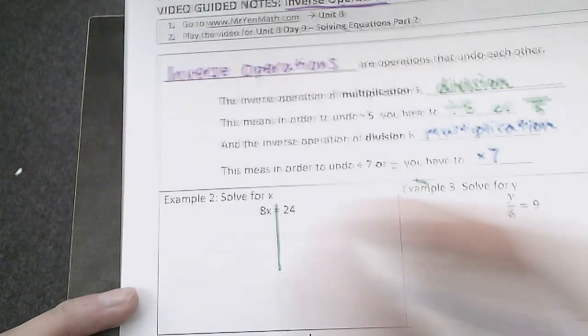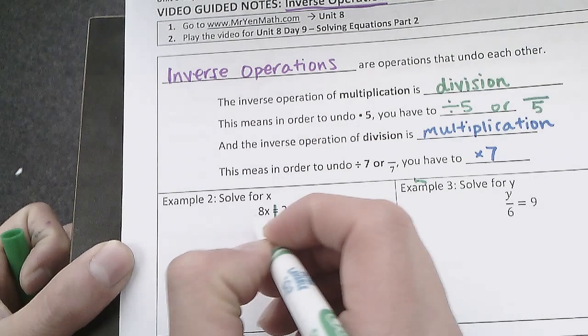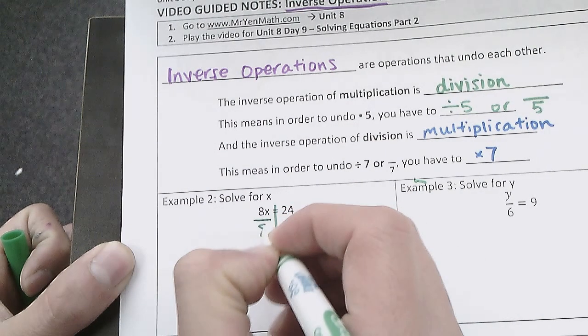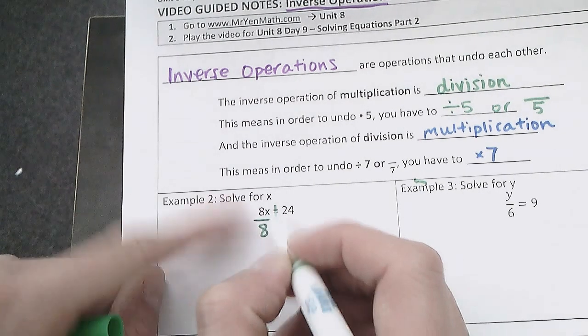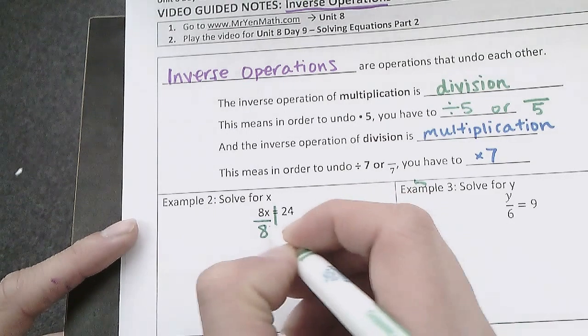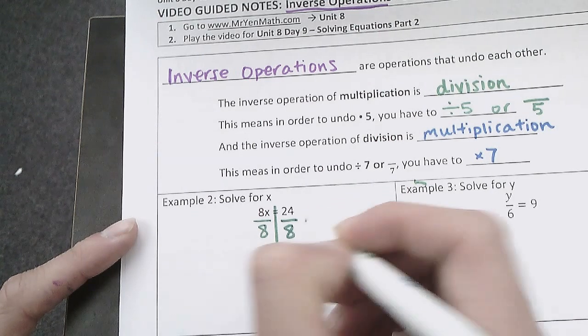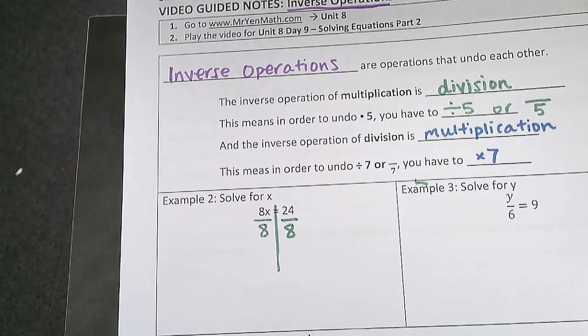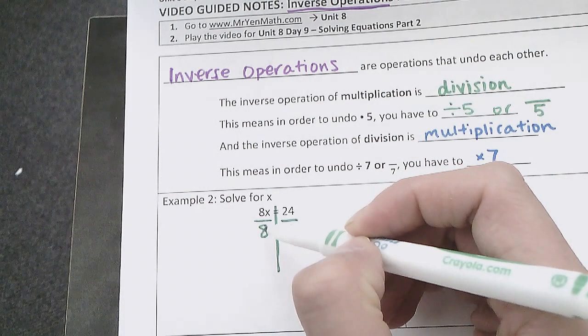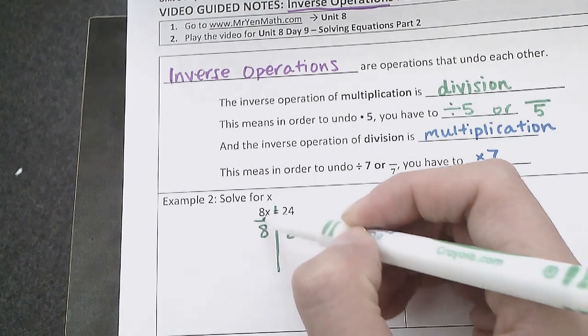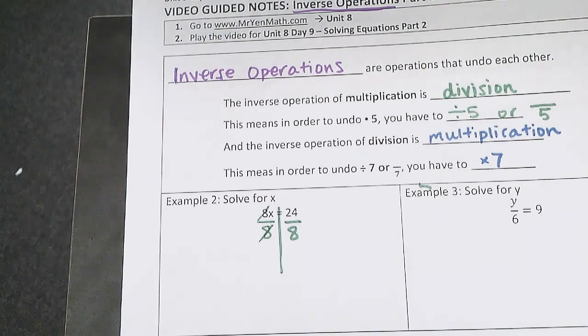So 8 times x—the opposite of multiplying by 8 is dividing by 8, so I'll put a dividing by 8. That's like putting 8 as a denominator, that means dividing by 8. And if I divide by 8 on the left side, I also have to divide by 8 on the right side. And I can start to simplify. So I had 8 times x divided by 8, so the 8 times and the 8 divided by, that cancels each other out, so those are gone.